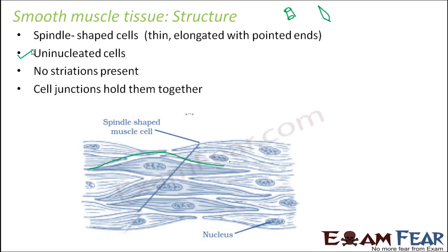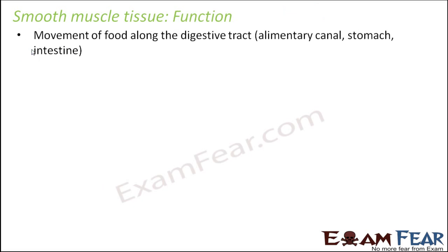Cell junctions hold smooth muscle cells together. Their function includes movement of food along the digestive tract. When you eat something, your skeletal muscles are involved until you swallow. But once the food gets into the food pipe, you cannot stop it from going to the stomach — that movement happens on its own, no longer under our control. It is then under the control of the smooth muscles present along the digestive tract.